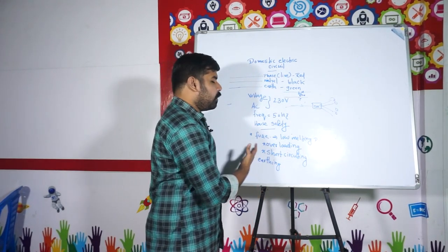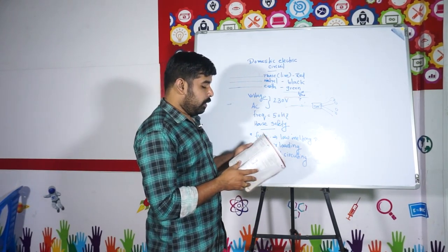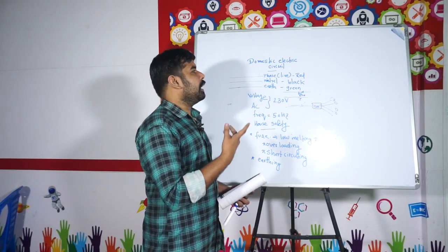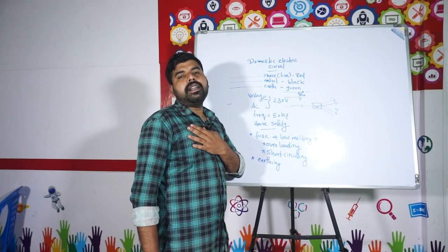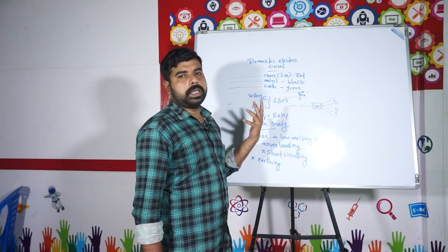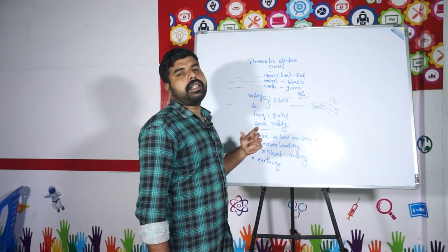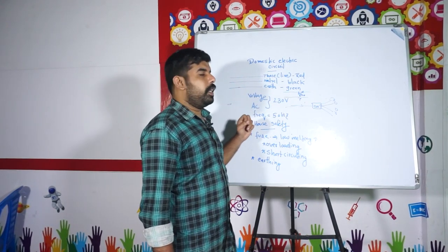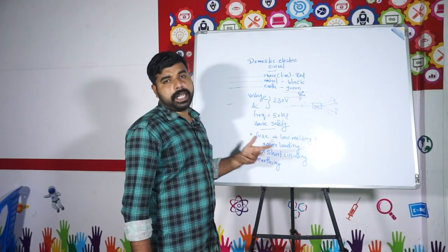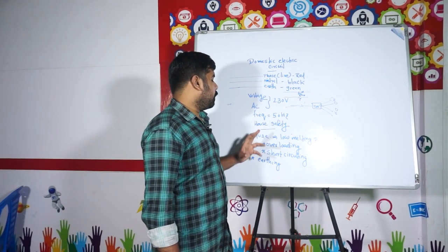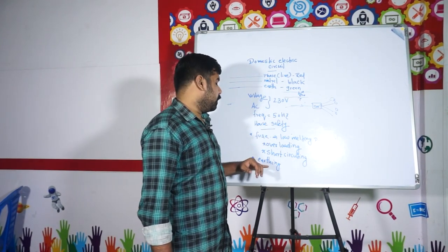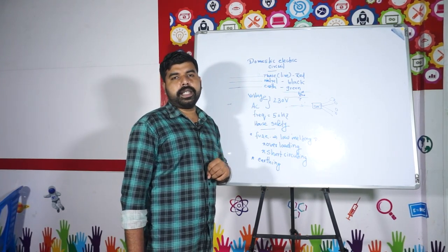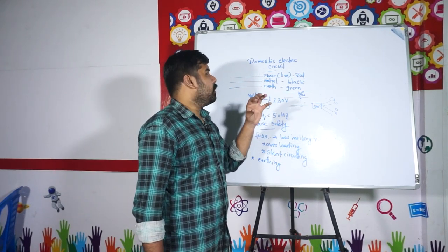So to summarize the deleted portion: DC and AC sources, the generator working principle, the diagram, the wires in the house electric circuit, the voltage and frequency, the fuse, earthing, and electric safety measures. That is the deleted portion covered in short. Thank you.